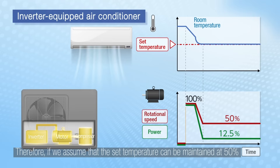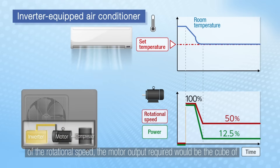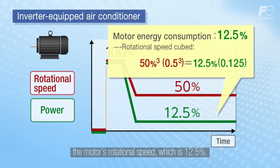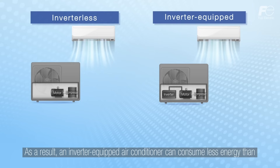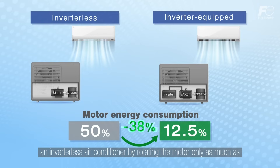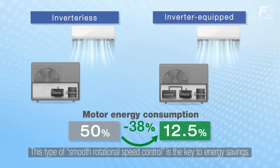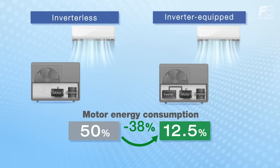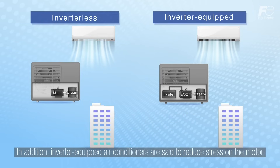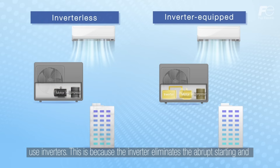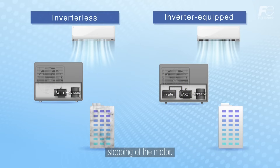Therefore, if we assume that the set temperature can be maintained at 50% of the rotational speed, the motor output required would be the cube of the motor's rotational speed, which is 12.5%. As a result, an inverter-equipped air conditioner can consume less energy than an inverterless air conditioner by rotating the motor only as much as is necessary to maintain the room temperature. This type of smooth rotational speed control is the key to energy savings. In addition, inverter-equipped air conditioners are said to reduce stress on the motor and the entire system by more than six times compared to air conditioners that do not use inverters, because the inverter eliminates the abrupt starting and stopping of the motor.